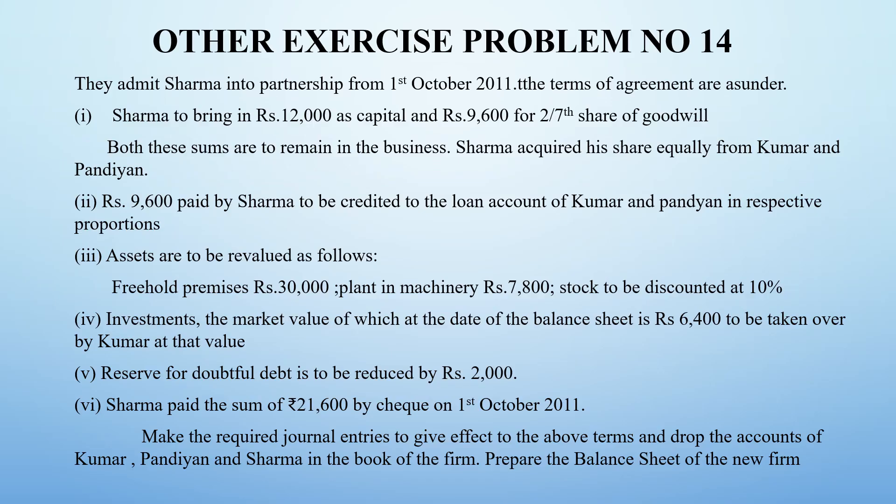Sharma has decided to enter into the business with the following agreements. Sharma is to bring ₹12,000 as capital and ₹9,600 for goodwill. These sums are to remain in the business, and Sharma acquired his share equally from Kumar and Pandian — meaning Kumar and Pandian will have sacrificed equally.